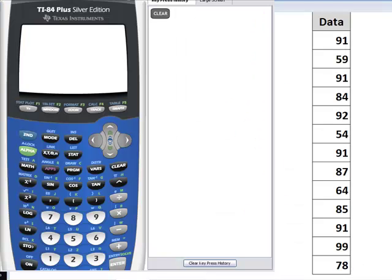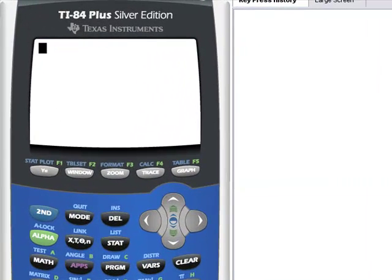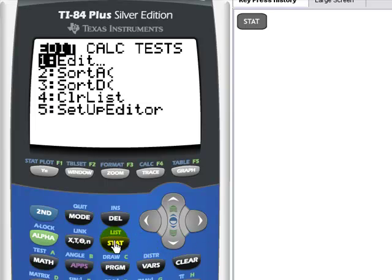To record the data into the calculator memory, I'm going to put it into list number 1. First, I'm going to clear. Then, I'm going to go to STAT. At the top are three choices: Edit, Calculate, Test.